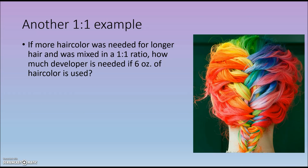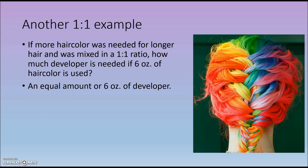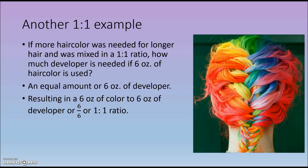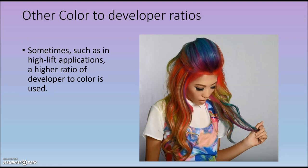If more hair color is needed — say for a long head of hair — and we're using a 1 to 1 ratio, how much developer is needed if 6 ounces of hair color is used? Since it's a 1 to 1 ratio, it would be an equal amount of developer: 6 ounces of developer to 6 ounces of hair color. Expressing this as a fraction, 6 over 6 reduces to 1 over 1.